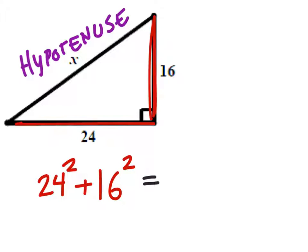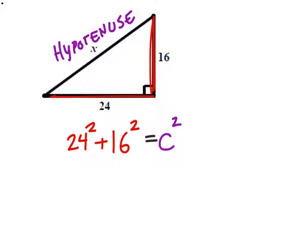And this should equal the hypotenuse, which is usually represented by the letter C, and we will square these. Now we've got 24 squared and 16 squared, and we're going to equal that to C squared.